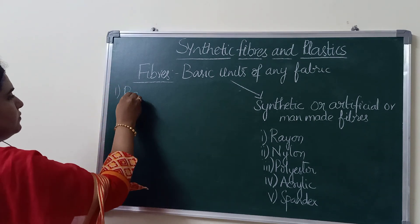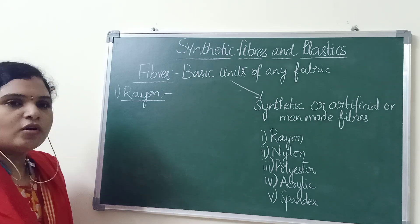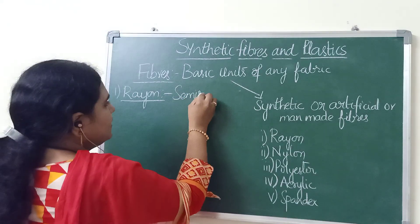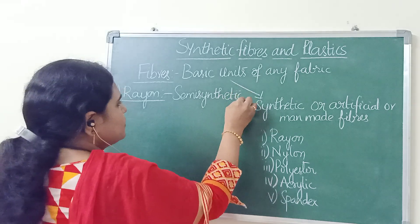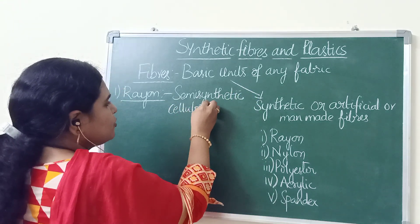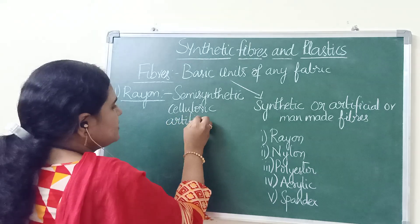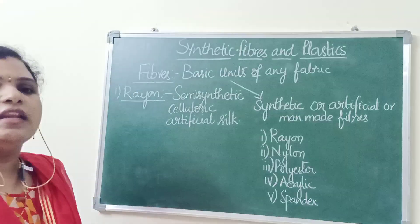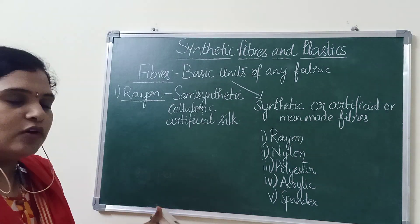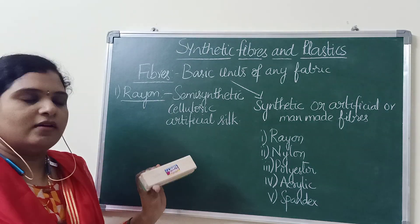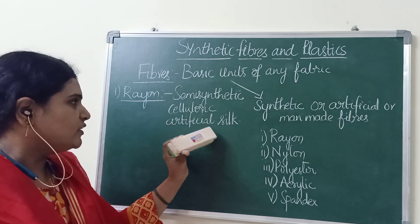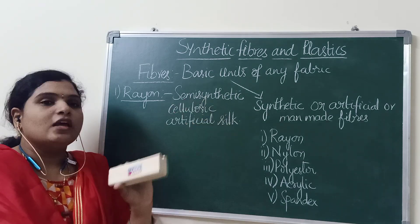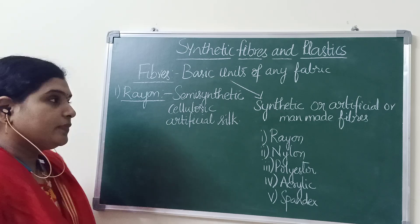Going to individual fibers — the first one is rayon. It is not completely synthetic; it is a semi-synthetic fiber because it is derived from cellulose, a cellulosic fiber. It is also called artificial silk because it resembles silk. Since silk is costly, there was a need to invent another fabric resembling silk's properties, and rayon was invented for that purpose.